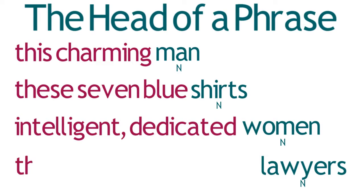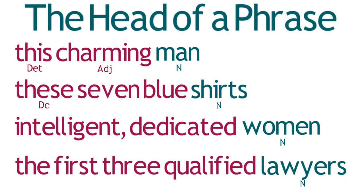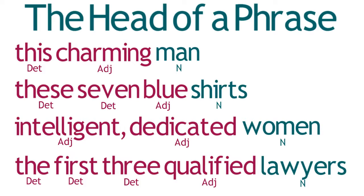For example, each of these four noun phrases includes a different combination of determiners and adjectives. Each, however, ends with a noun that anchors the phrase and identifies who or what the phrase denotes. In each case, this noun is called the head of the phrase.